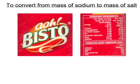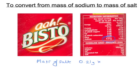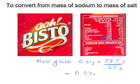How much salt are you getting in a typical serving of Bisto gravy? The label says a serving contains 0.21 grams of sodium. The equivalent mass of salt is going to be 0.21 grams multiplied by the conversion factor 58.5 over 23, which comes to 0.53 grams — considerably more. You won't need to memorise 58.5 and 23; just remember the formula of salt is NaCl and use your periodic table to work those figures out.